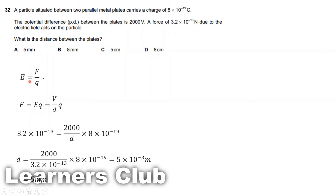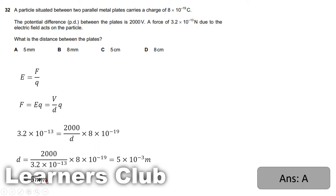Electric field strength equals force per unit charge, so force equals E times q. Since we don't know E directly, we also use electric field strength equals the potential gradient V over D. Voltage is 2000 volts, charge is 8×10⁻¹⁹ coulombs, and force is 3.2×10⁻¹³ newtons. Making D the subject and using a calculator gives 5×10⁻³ meters, which equals 5 millimeters. The answer is A.